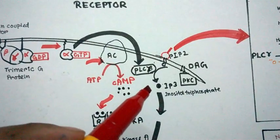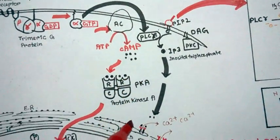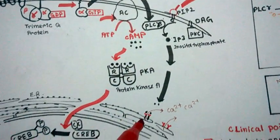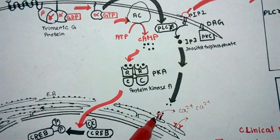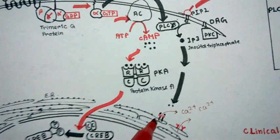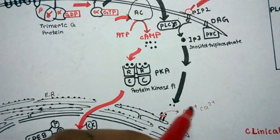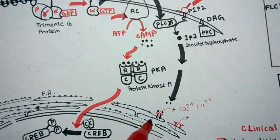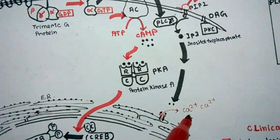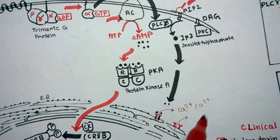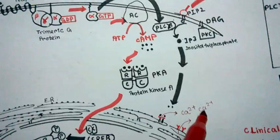When IP3 is generated, it will carry the signal and go to the ER, the endoplasmic reticulum. On the endoplasmic reticulum it will bind to specific channels and open the calcium ion channels. The stored calcium ions in the ER will get out into the cytosol.